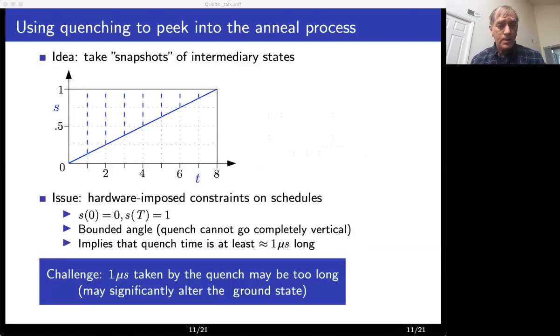So what is our plan for using quenching? Our idea is that since quenching ends the anneal so fast, it may have preserved some information about the state at the time just before the quench starts. So specifically, we want to collect quench information at regularly spaced points, which we call slices, and then put it together to get a picture of how the state evolves during the entire anneal. There is one problem though. Due to hardware limitations, the shortest quench that is allowed takes time about one microsecond. So for some problems, one microsecond might be okay, but for others, it will be too long and it may significantly alter the state before the quench.